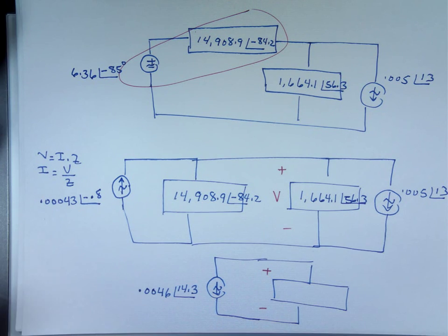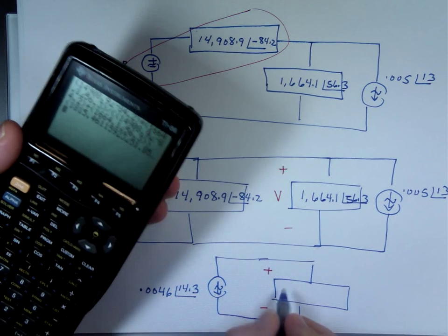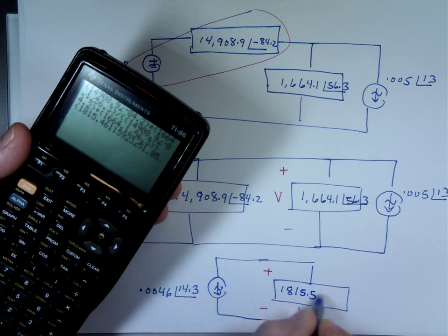And these two is going to be the product over the sum. So let's go through them. The product is 14,908.9 angle negative 84.2 times 1,664.1 angle 56.3, divided by the sum of them, 14,908.9 angle negative 84.2 plus 1,664.1 angle 56.3. If I push all the right buttons again, this answer is 1,815.5 angle 51.9.